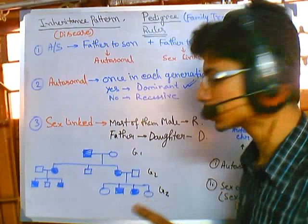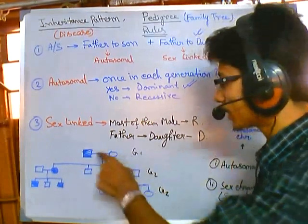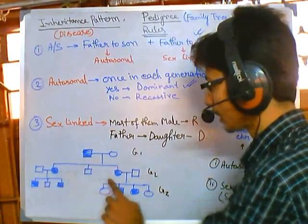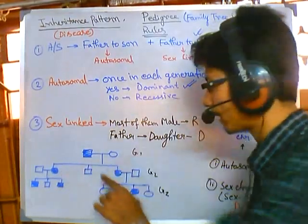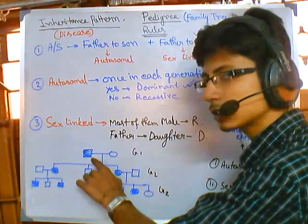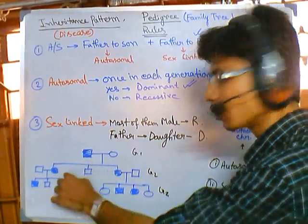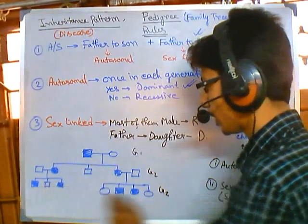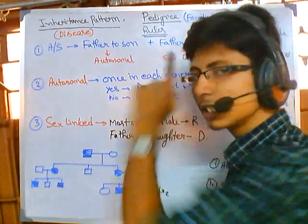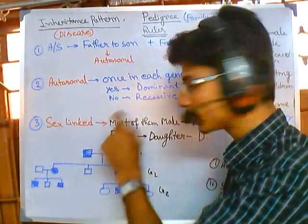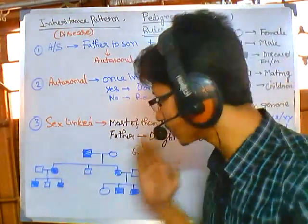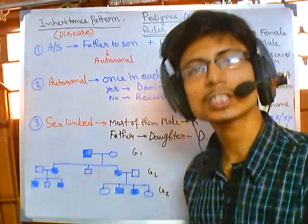The second question is: is it dominant or recessive? We can see that in each generation, people are affected. In generation one, this person is affected. In generation two, two daughters are affected. In generation three, three boys and one daughter are affected. So the trait is sex-linked dominant.